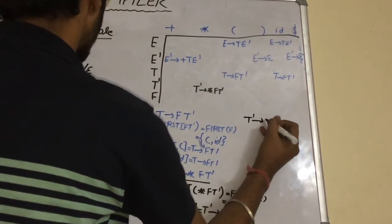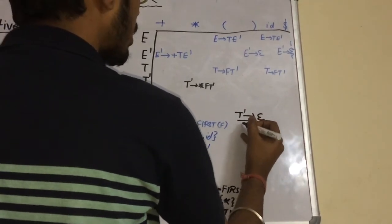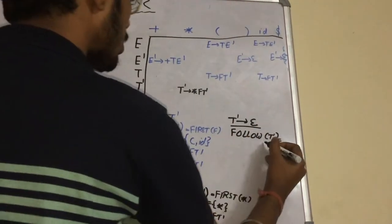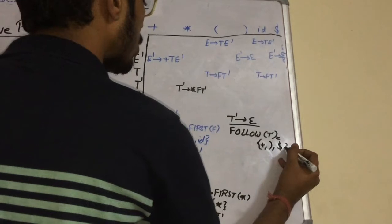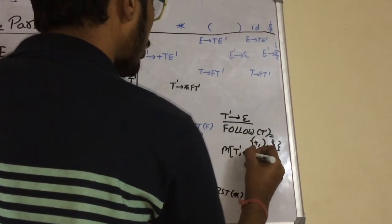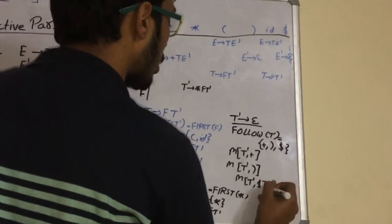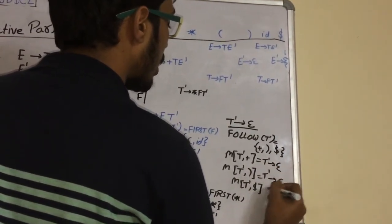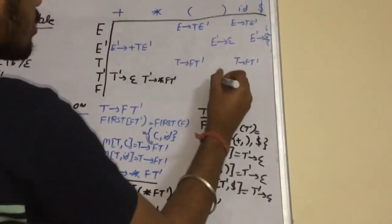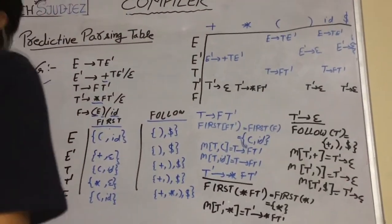Now take production T'→null. Since it derives null, we take FOLLOW of T'. FOLLOW(T') is plus, closing parenthesis, and dollar. So M[T', +] = T'→null, M[T', ')'] = T'→null, and M[T', $] = T'→null. So T' for plus gives T'→null, T' for closing parenthesis gives T'→null, and T' for dollar gives T'→null.